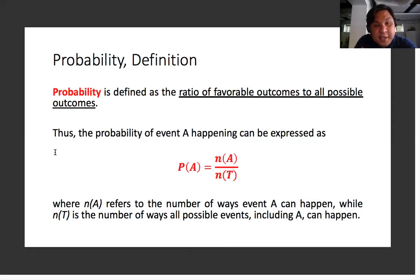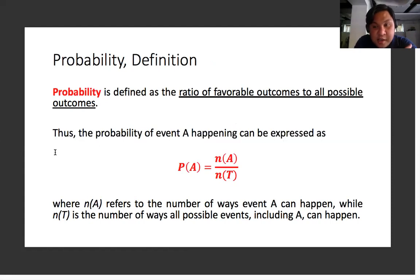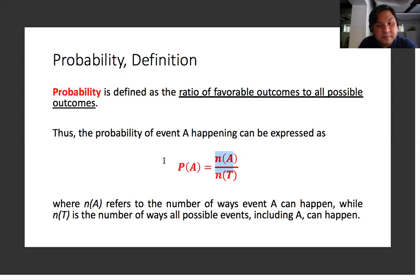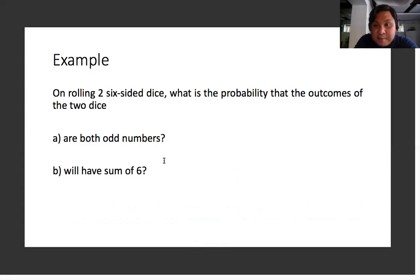So the definition of probability: probability is defined as the ratio of favorable outcomes to all possible outcomes. When you talk about probability, it's always going to be a ratio. It's always going to be smaller than one because you have fewer favorable outcomes compared to all possible outcomes. The probability of a particular event A is computed as the number of ways event A can happen divided by the total number of possible outcomes. The total possible outcomes is definitely more than the number of ways the desired event A will happen.